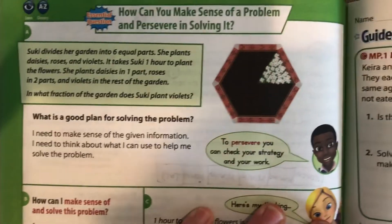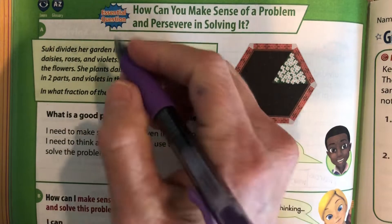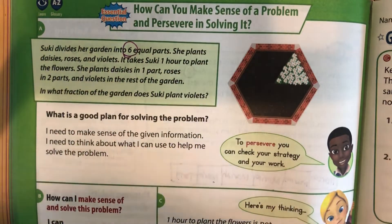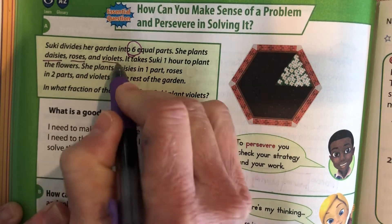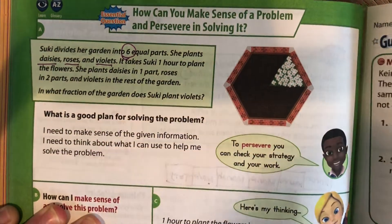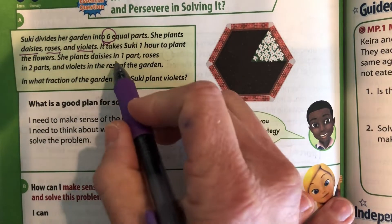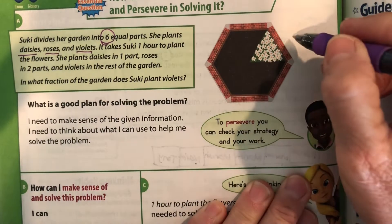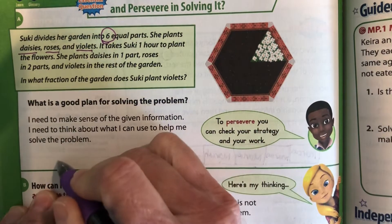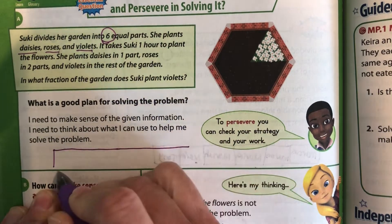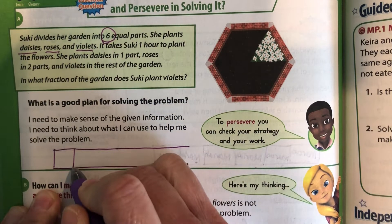So let's go to the back. Suki divides her garden into six equal parts, and she plants daisies, roses, and violets. They at least told us six equal parts this time, so we know that. She plants three different kinds of plants. It takes her one hour to plant the flowers. So here's our garden — this part is daisies.